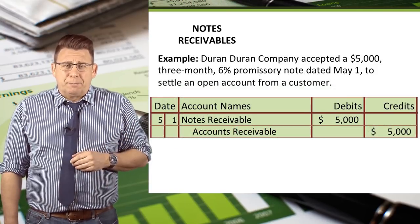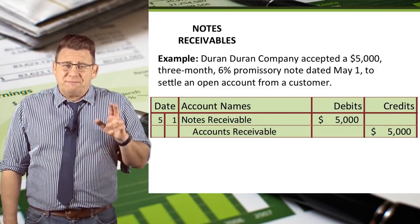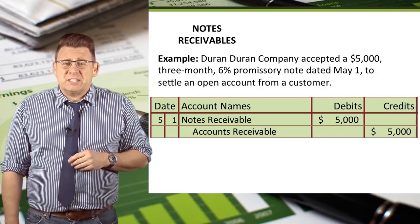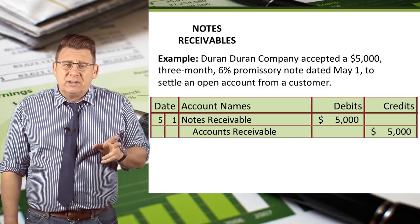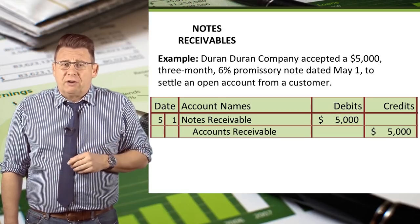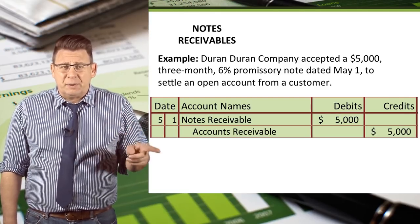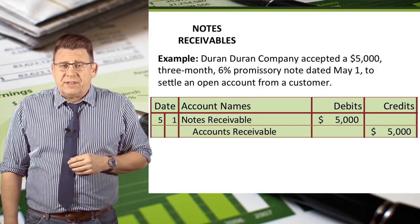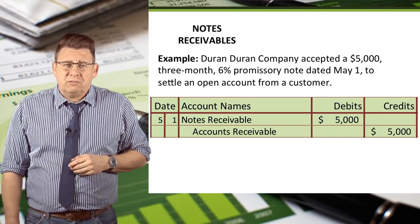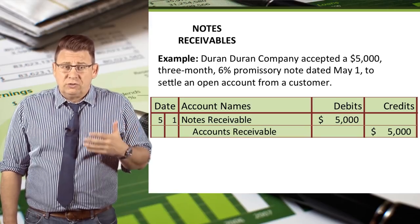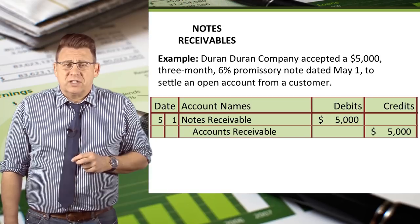Let's look at a typical example. The Duran Duran Company accepts a $5,000, 3-month, 6% promissory note dated May 1 in settlement of an open account from a customer. The journal entry to record this note is a debit to notes receivable for $5,000 and a credit to accounts receivable for $5,000, since the note was issued to settle a past due account.